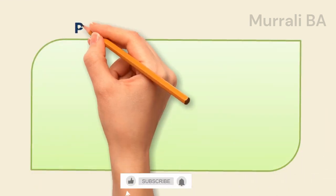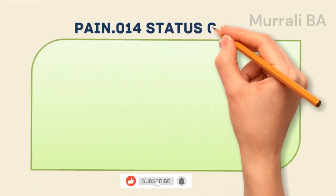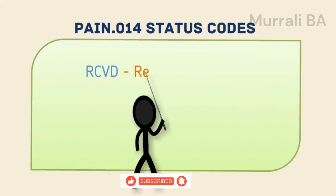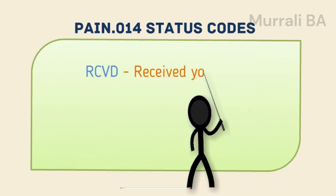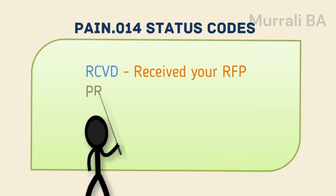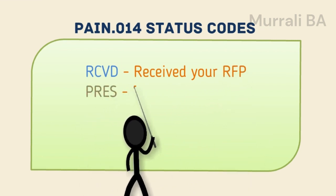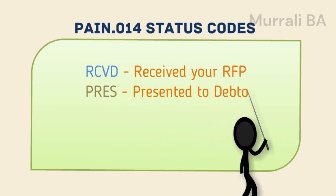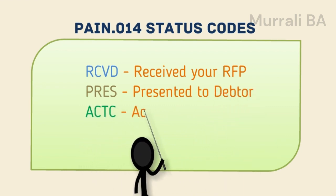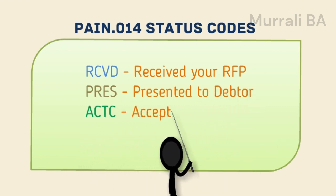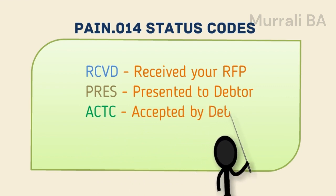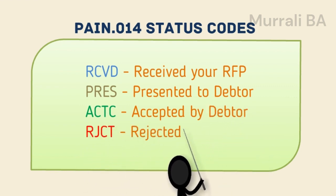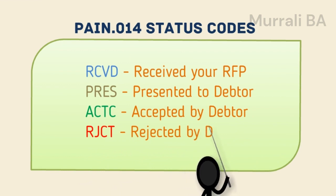Coming back to the status codes. The first one is RCVD — received — meaning your Pain.013 RFP request is received by person ABC's bank. Next is PRES — presented to the debtor. Then ACTC — accepted. And RJCT — rejected. So when you send a Pain.013 message, it is not guaranteed that you will receive money from the other party.